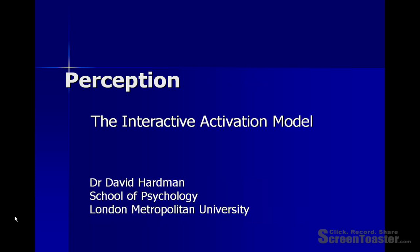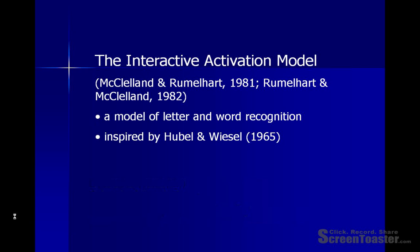Hello, this is David Hardman and in this presentation I'm going to describe the interactive activation model. This is a model that was devised by McClelland and Rumelhart in the early 1980s in order to explain letter and word recognition. And it was inspired by the work of Hubel and Wiesel from the mid-1960s, who discovered that there are neurons in the visual cortex which only respond to certain kinds of stimuli.